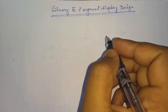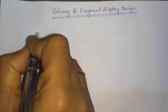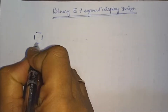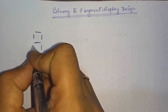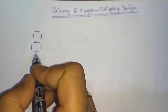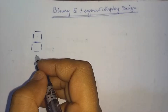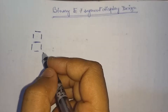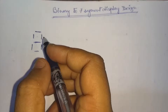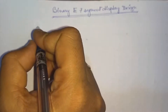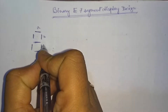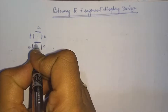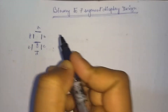A 7-segment display can be drawn like this. This 7-segment display is important because it can represent the decimal numbers from 0 to 9. It is called a 7-segment display because it uses 7 segments: A, B, C, D, E, F, and the last one, G.